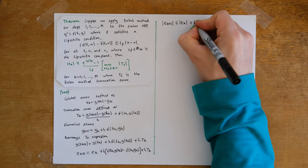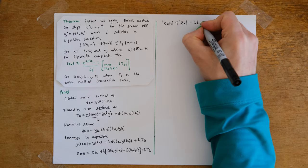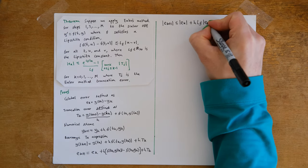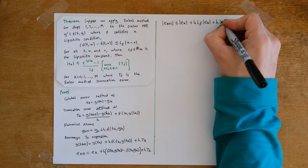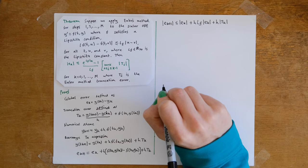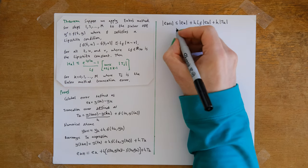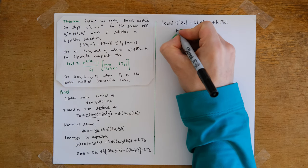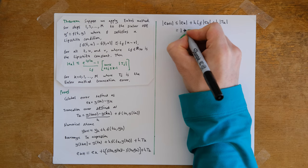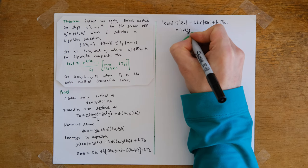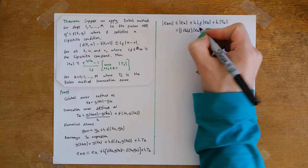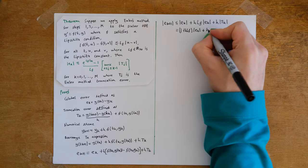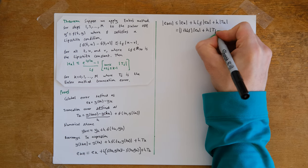Using the Lipschitz condition and the triangle inequality, we obtain that |e_{k+1}| ≤ (1 + h·L_f)|e_k| + h·|T_k|.